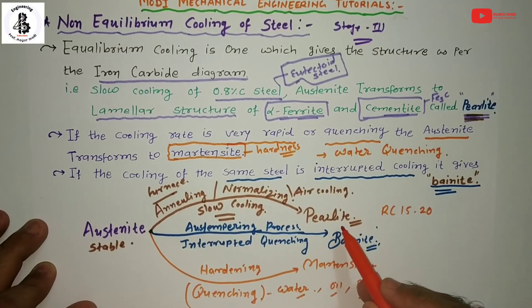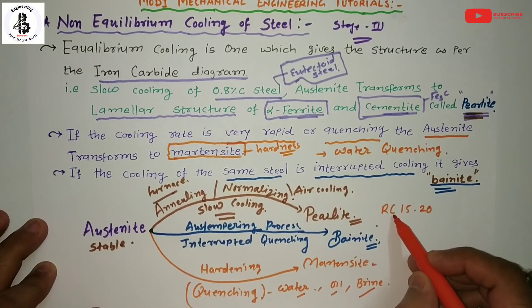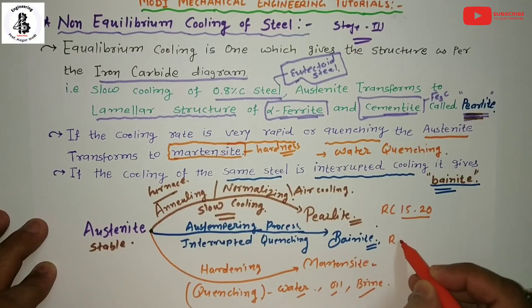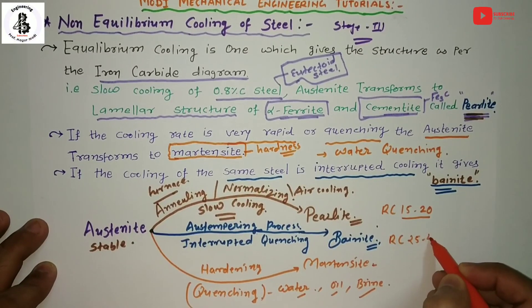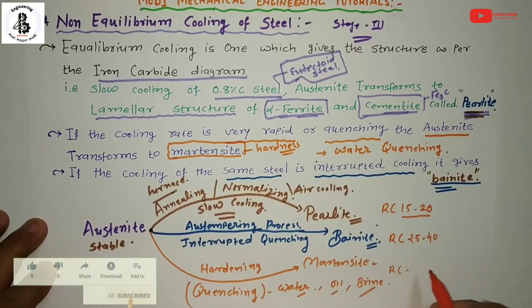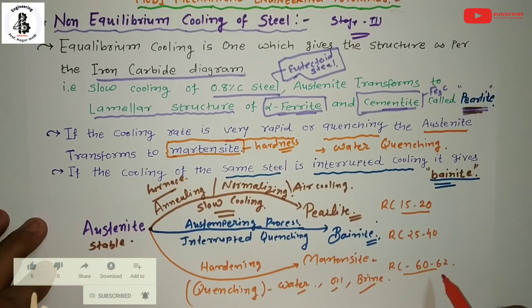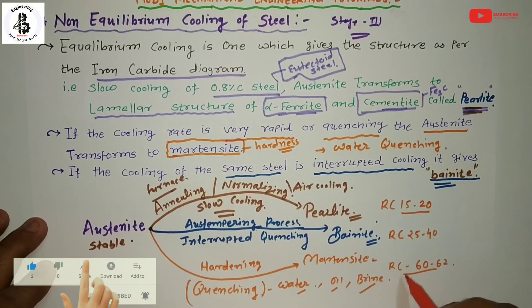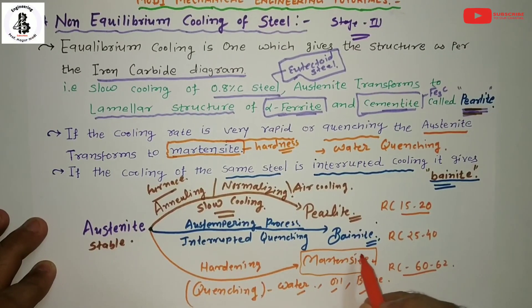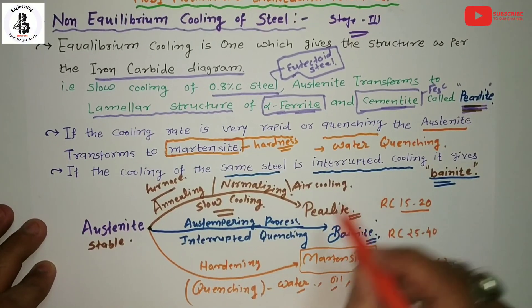Measuring hardness for different structures — pearlite, bainite, and martensite — using the Rockwell hardness test (RC scale): pearlite is around 15 to 20 RC, bainite is around 25 to 40 RC, and martensite is the maximum at 60 to 62 RC. This indicates that the quenching process produces a hard structure. All cutting tool materials have a martensite phase, which gives them the hardness needed to cut other materials.